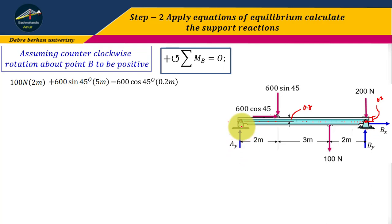Next, Ay. Ay creates clockwise rotation with a perpendicular distance of 2 plus 3 plus 2, which is 7 meters. Minus Ay times 7 meters equals to zero. Therefore, Ay equals to 319 Newtons.